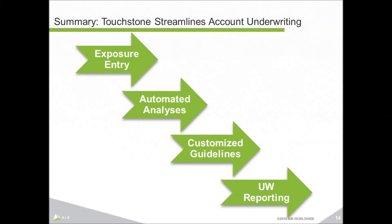That concludes our demonstration. In summary: we started with a submission and imported it. With the press of that single button, Touchstone was off and running — geocoding, running a series of analyses, and overlaying results on our customized guidelines as shown by the red, yellow, and green traffic lights. Finally, the underwriting reporting allows you to create and customize a PDF report that you can download, print, and distribute. That concludes today's webinar. Thank you very much for your time.